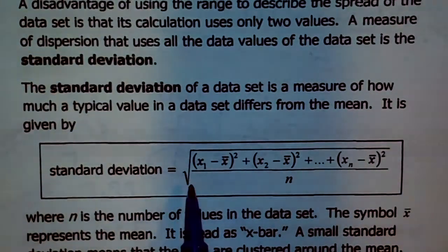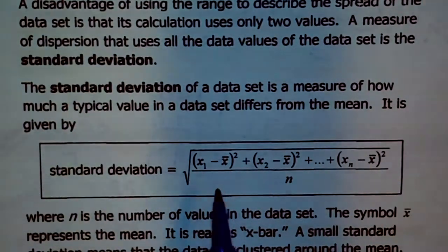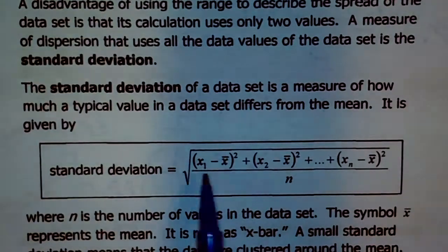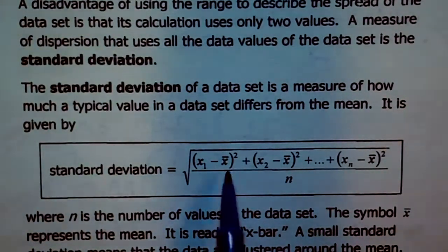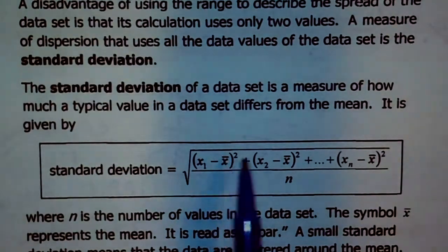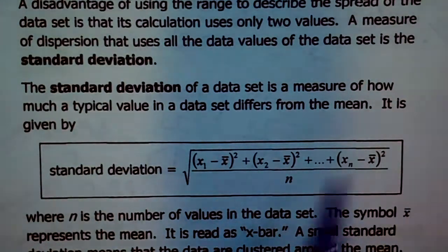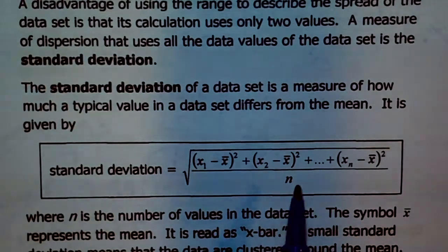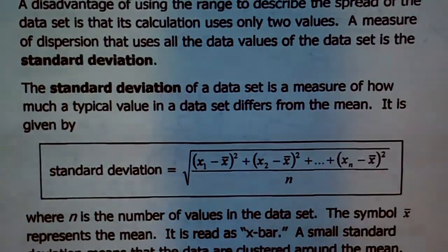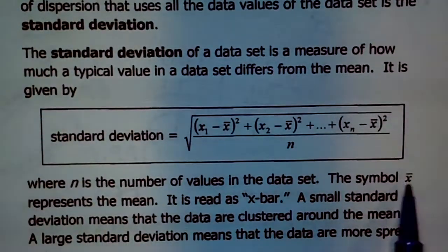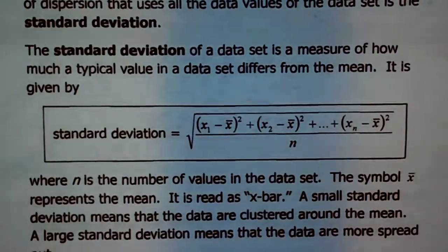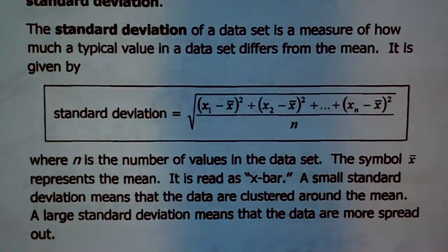To calculate the standard deviation — a measure of dispersion — you subtract each data value by the mean, square it, and add it to all the rest, then divide by how many data values you have in your set, and take the square root of that. In this formula, n is the number of values in the data set. The symbol x with a bar over the top of it represents the mean — we read it as x-bar.